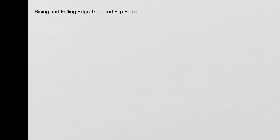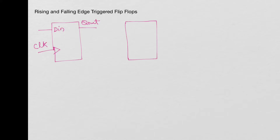First let's start with the symbols for the two flip-flops. For the rising edge flip-flop you have DN as input and Q out as an output, and clock is the input. For the falling edge triggered flip-flop you have DN and Q out — the same inputs and outputs — but at the clock there is a bubble at the input. This is the rising edge triggered flip-flop and this is the falling edge triggered flip-flop.